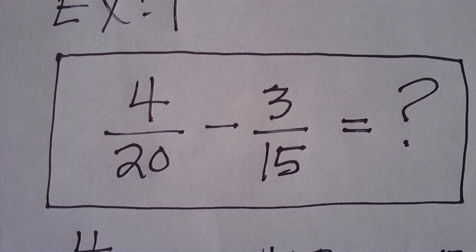We've got 4 twentieths minus 3 fifteenths. To combine these two fractions, we must have a least common denominator.